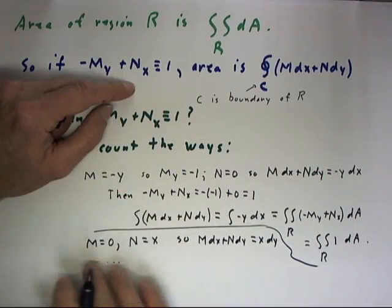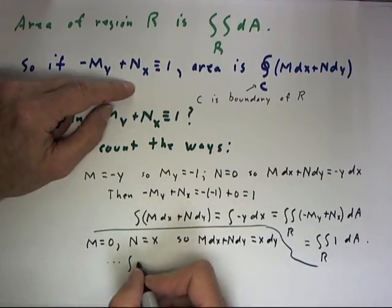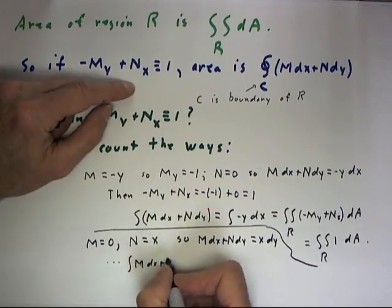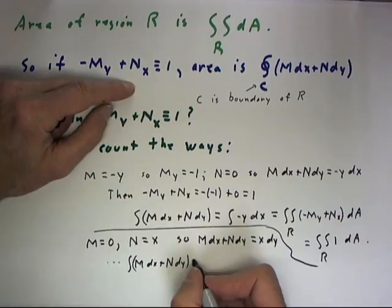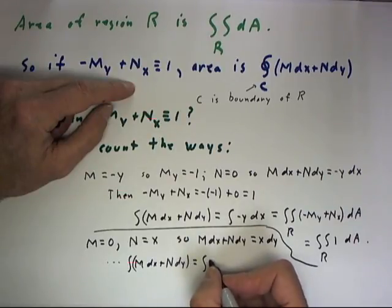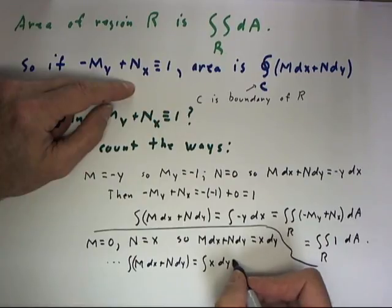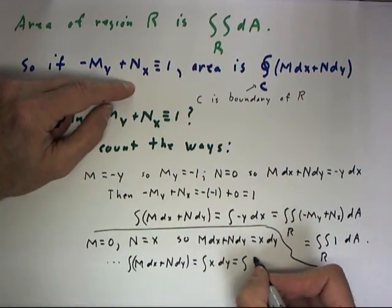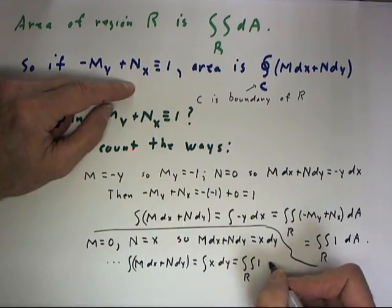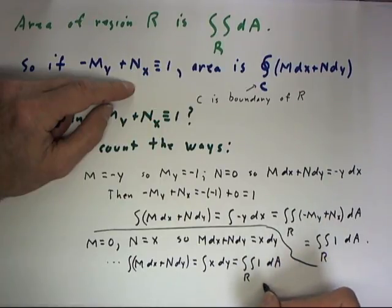Without going through all the lines of the argument, the integral of Mdx + Ndy is equal to the integral of Xdy, which is equal to the integral over the region of 1 dA, which is the area.